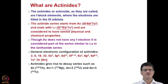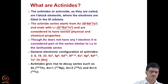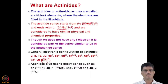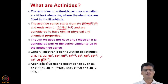The general electronic configuration of actinides is given here — the outer core of radon, with electron filling in the S, P, D, and F shells. The detailed electronic configuration will be discussed separately in another lecture.